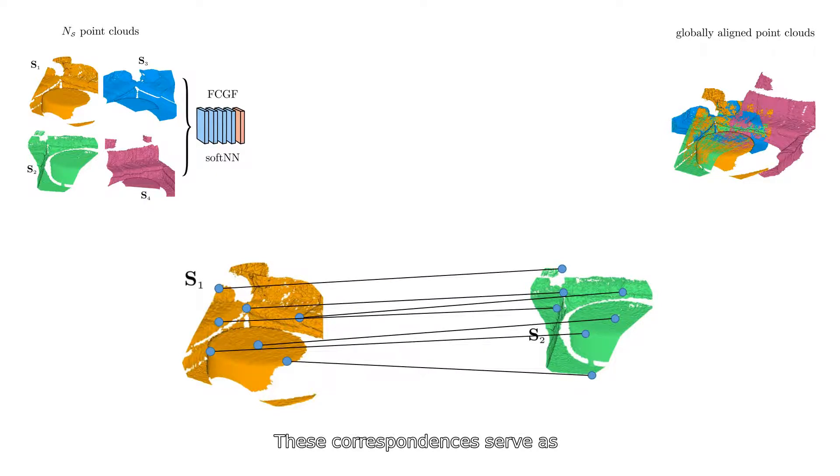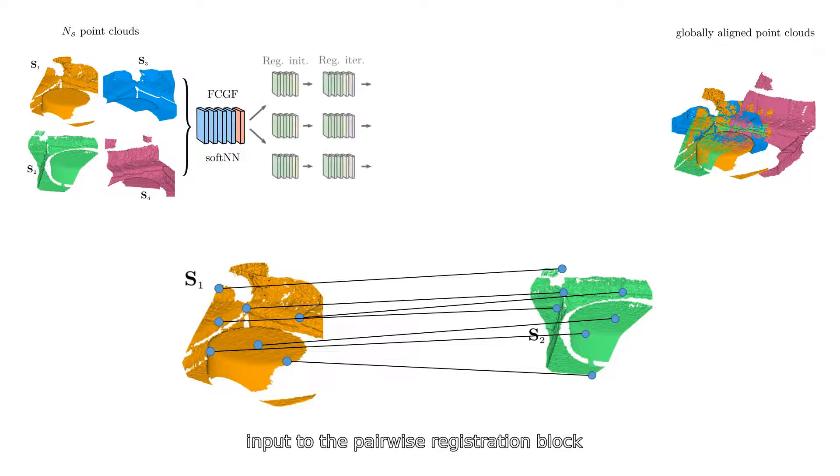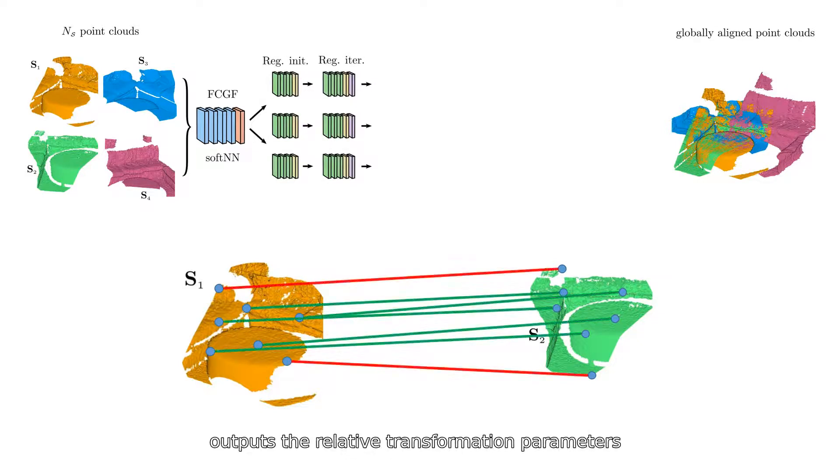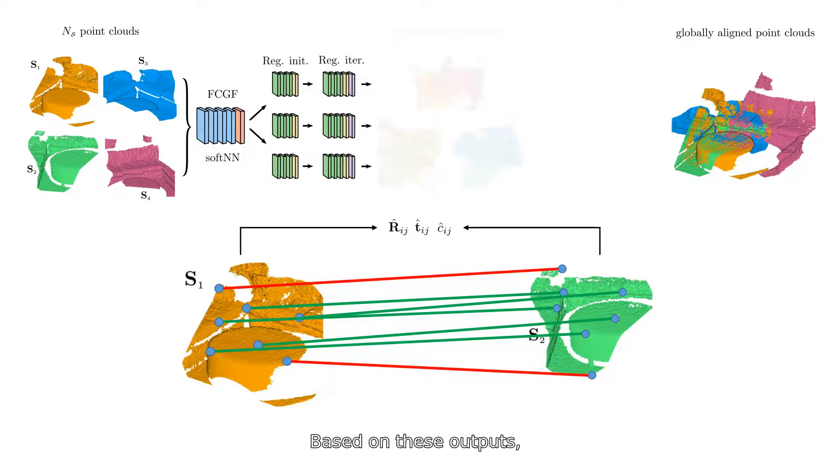These correspondences serve as input to the pairwise registration block that filters them and outputs the relative transformation parameters together with their confidence. Based on these outputs,